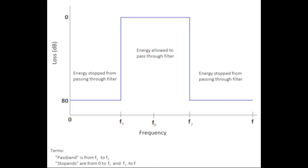In the pass band range of frequencies, which is F1 to F2 and centered at F sub 0, there is very little insertion loss. In the ideal case shown here, there's zero loss, so all the energy at those frequencies will pass through — that's the pass band. Then at F2 and beyond, it transitions back down to very high insertion loss, 80 dB, and the energy transferred through this filter is essentially zero. So a bandpass filter, as the name implies, has a band of frequencies that passes energy through, but it also has two stop bands — one to the left and one to the right of the pass band.